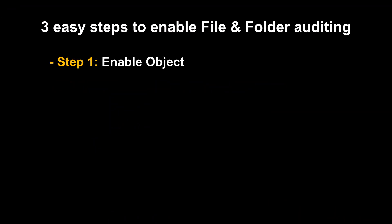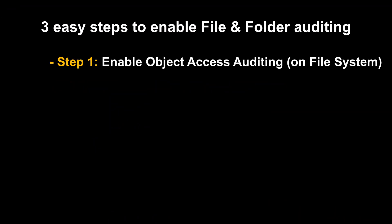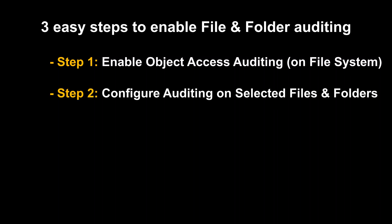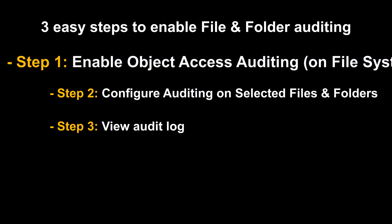There are three easy steps to achieve this. The first step is to enable object access auditing on your Windows 10 PC. The second step is to configure auditing on the selected files and folders. And the third step is simply viewing the audit log. So let's start with step one: enabling object access auditing in Windows 10.